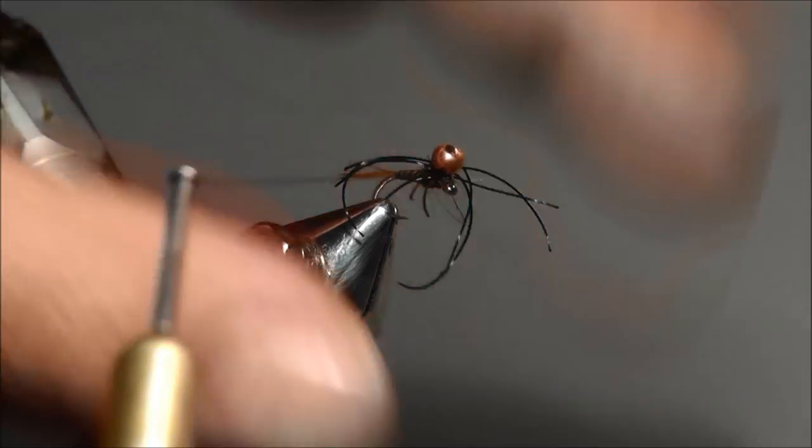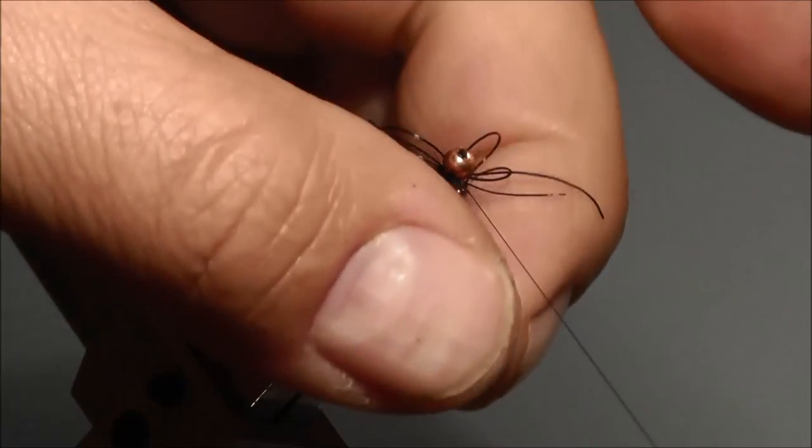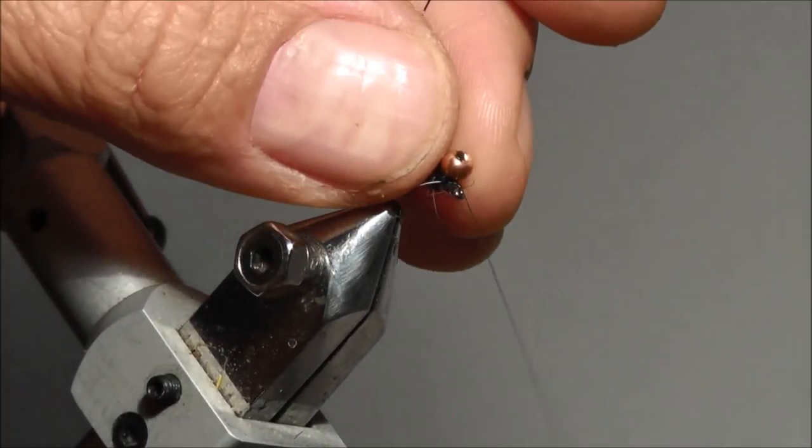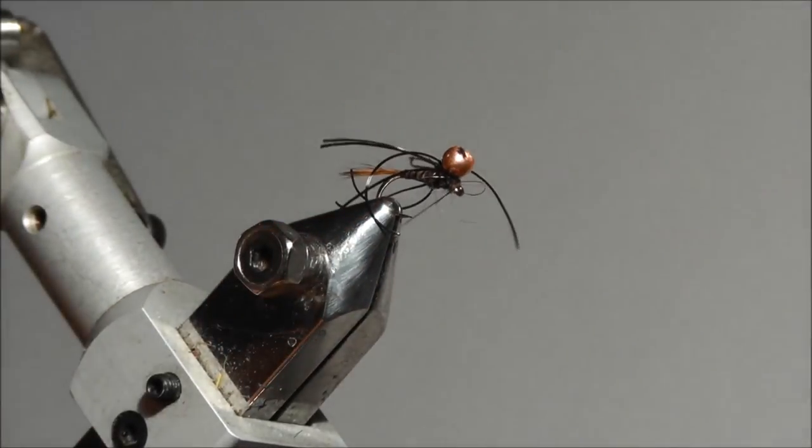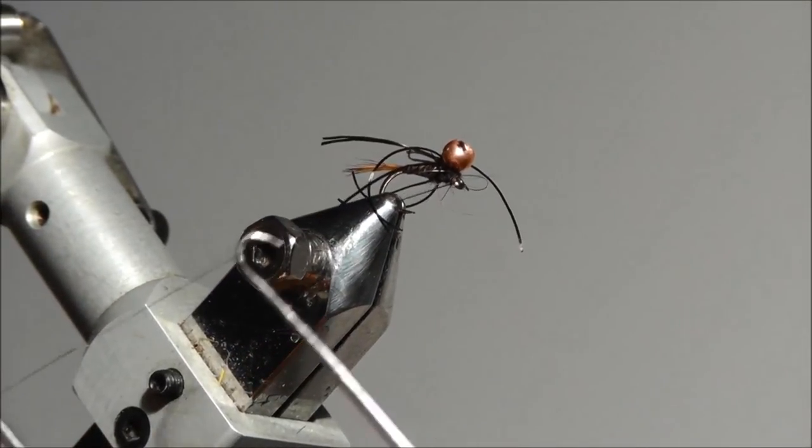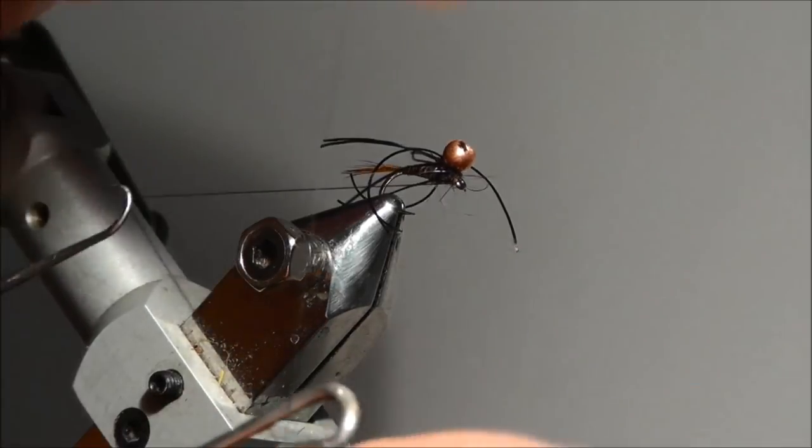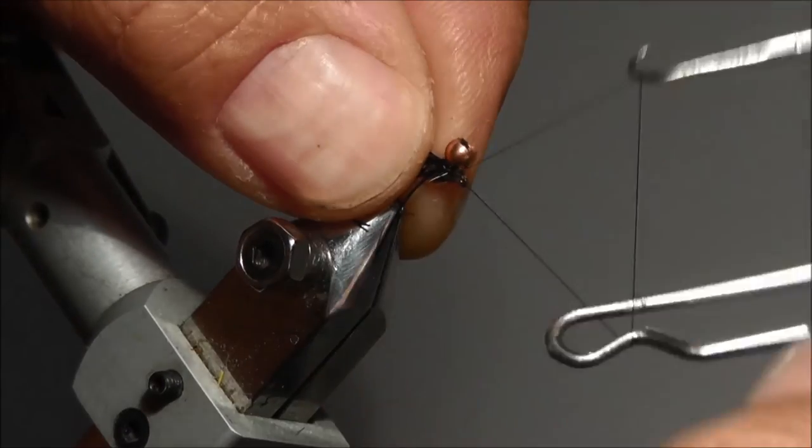Now you have to tie it off very neatly on the hook shank. So you grab the legs. You go underneath it. A couple of turns. You take your whip finish. And you make your knot.